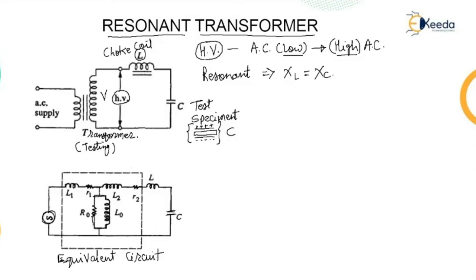The equivalent circuit of a high voltage testing transformer consists of the leakage reactance of the windings, the winding resistances, the magnetizing reactance, and the shunt capacitance across the output terminal due to bushings. The bushings are the electrodes where they are provided to prevent current flow through the live part. All these are considered, including the capacitance of the bushings of the high voltage terminal and of the test object, as shown in the diagram.